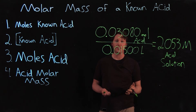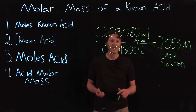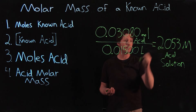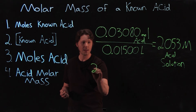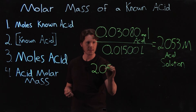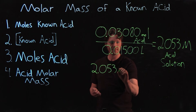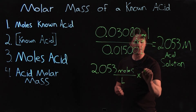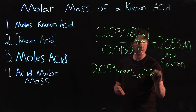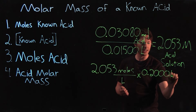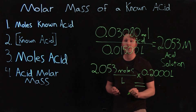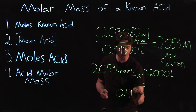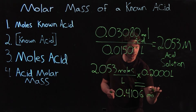We then use the total volume of acid solution created to figure out how many total moles were present in it. If you made a 200 milliliter solution — this volume comes from the size of your volumetric flask — we take 2.053 moles per liter times 0.20000 liters. That gives us 0.4106 moles of known acid total in the solution.